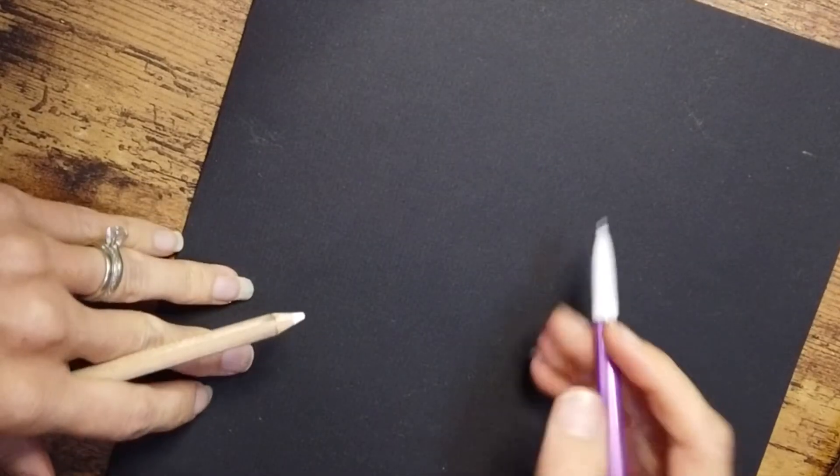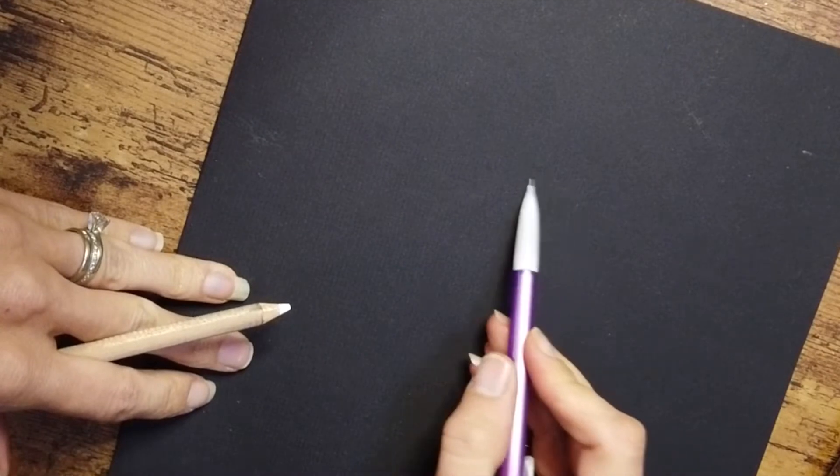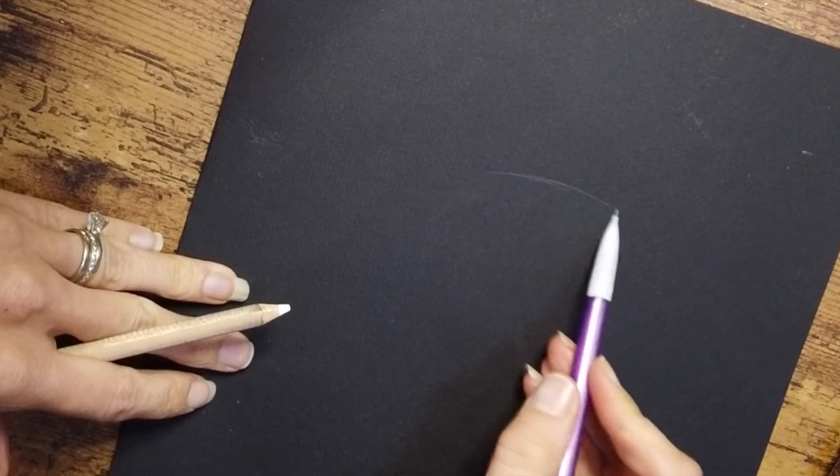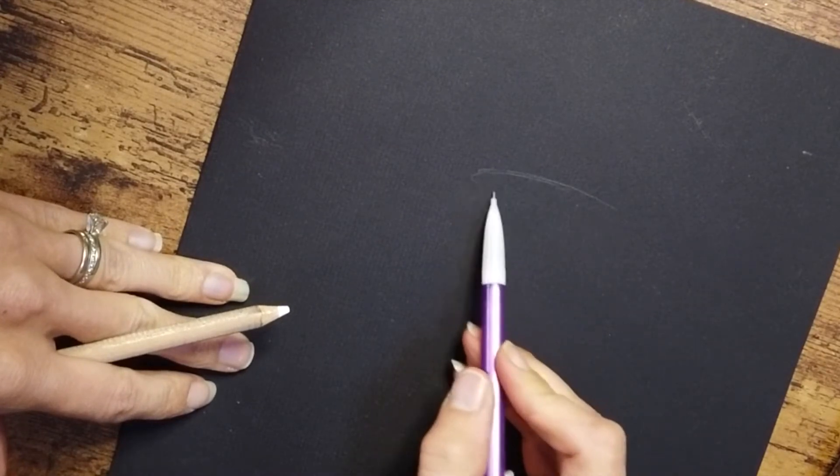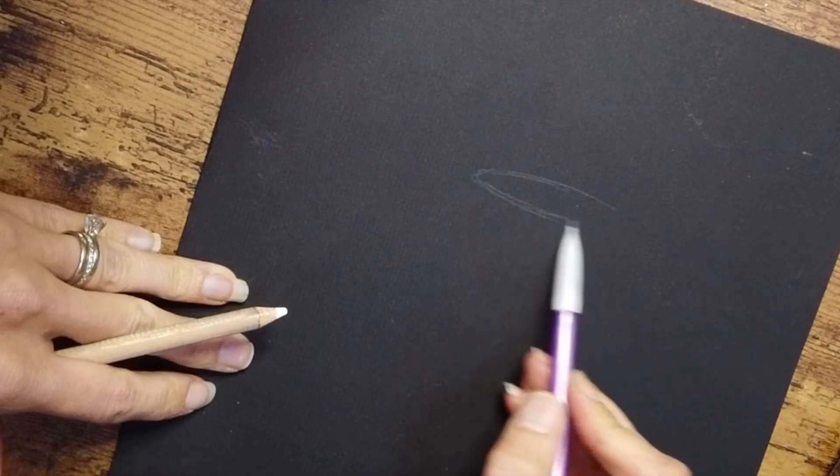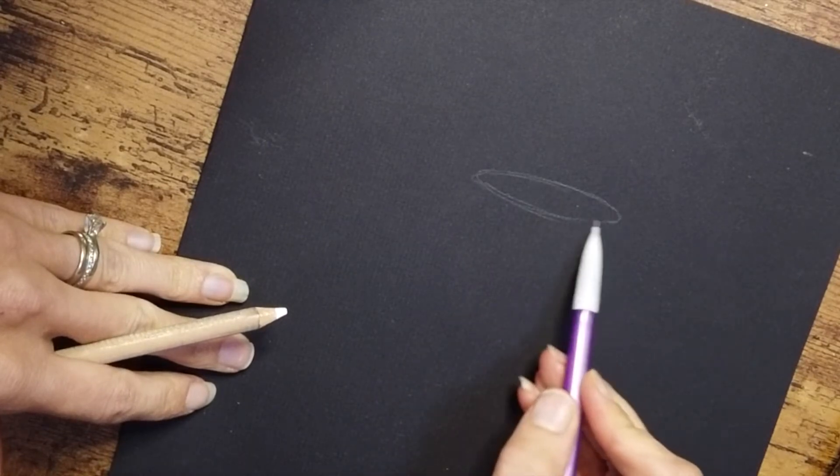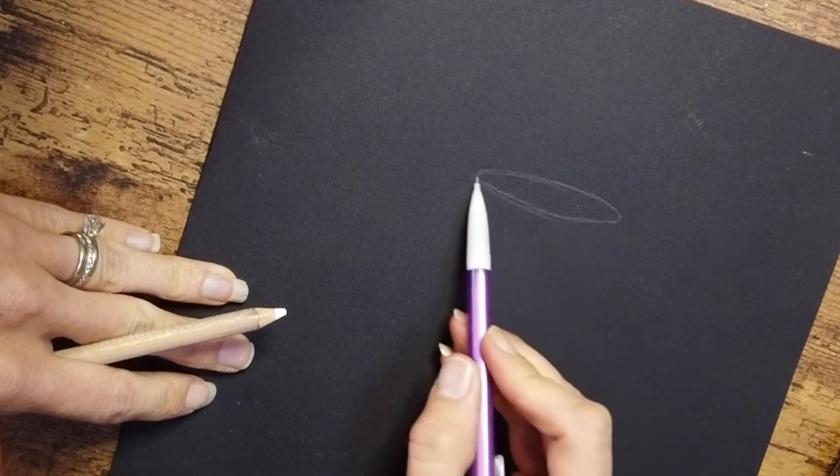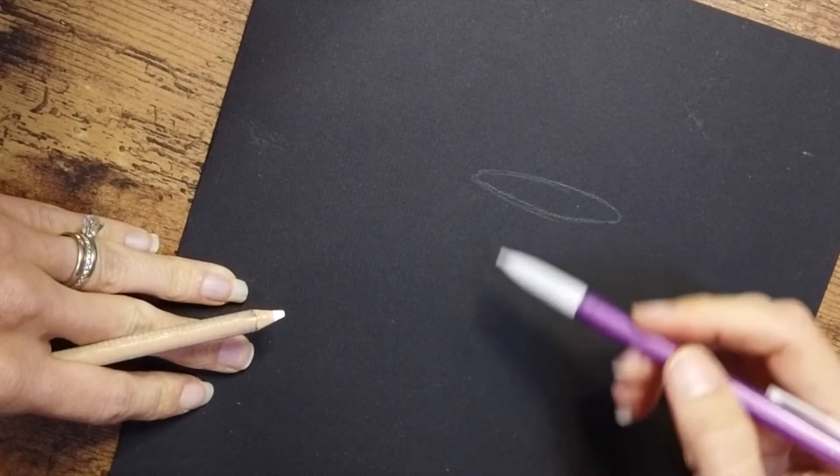Alright guys, let's practice using white charcoal by drawing a stemless wine glass. You're going to want to get a mechanical pencil or an H pencil with your black paper and start by drawing just an oval.